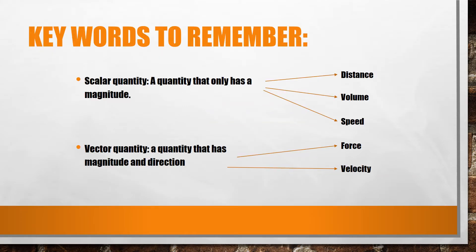Quick revision on the idea of scalar quantity and vector quantity. A scalar quantity only has a magnitude, so this means it only has a size or amount. These can be things such as distance, volume, or speed. A vector quantity still has magnitude, but it also has a direction attached. These can be quantities such as forces or velocity.